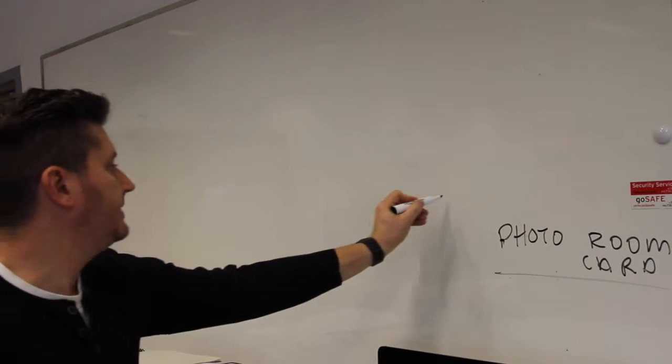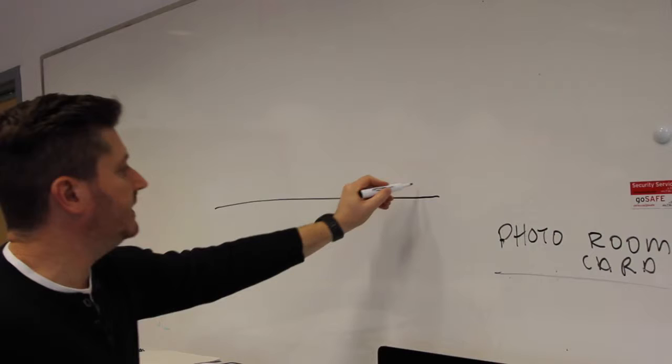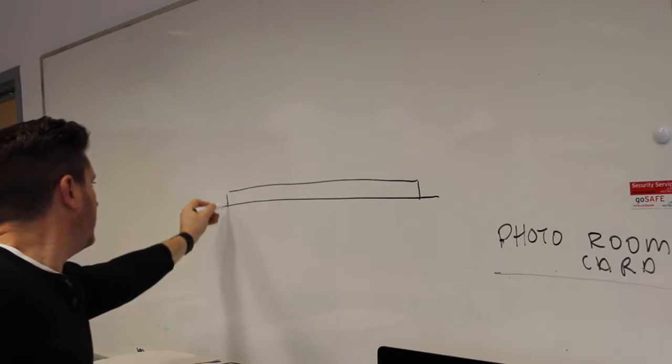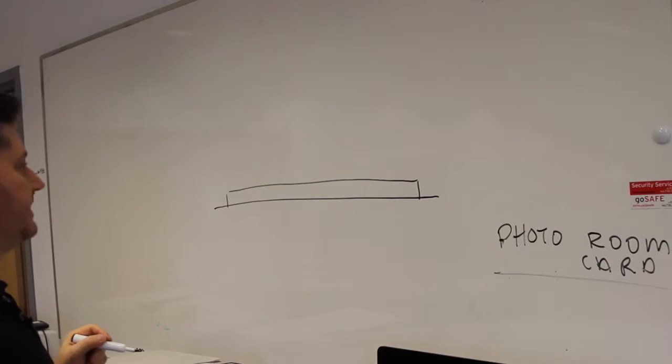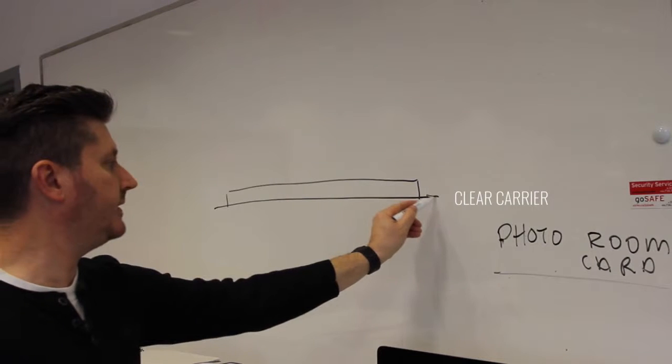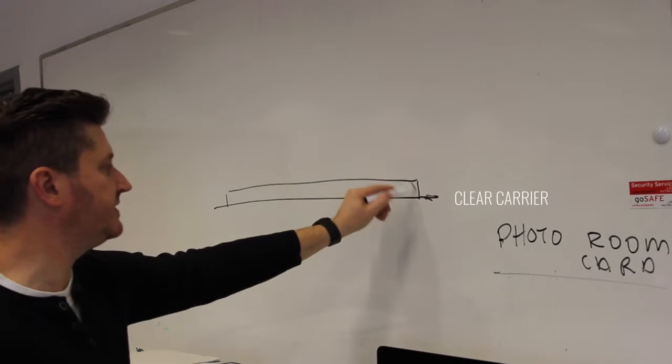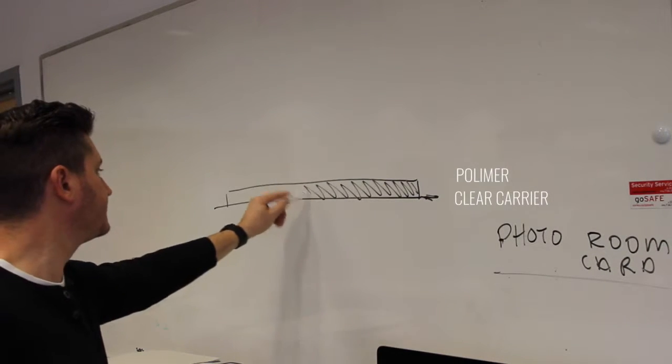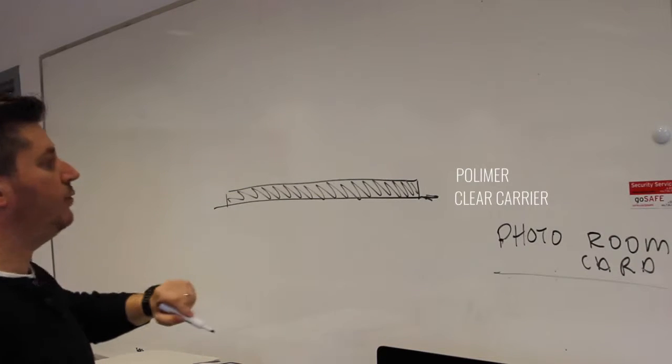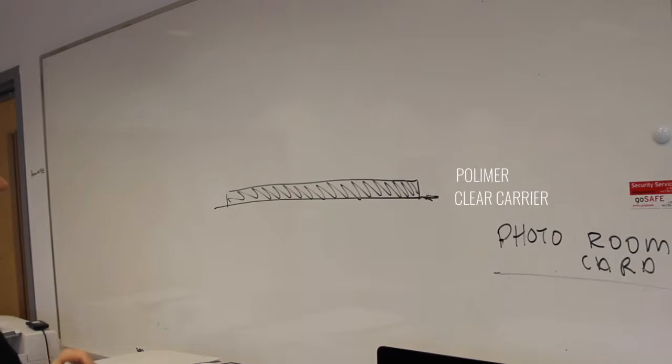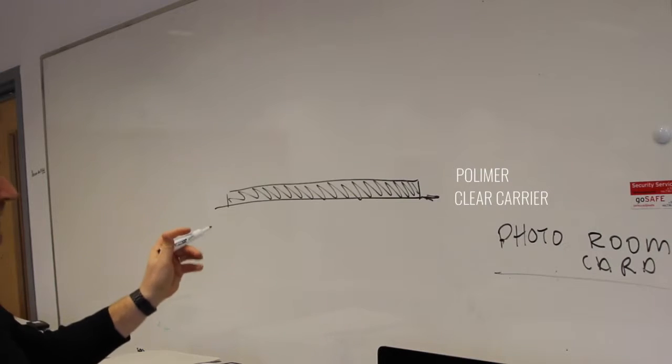So this diagram will show us how the polymer plate is constructed. There's a clear carrier below the polymer material, this being the polymer here, and what we want to do is have the ortho film come in contact directly with the polymer.